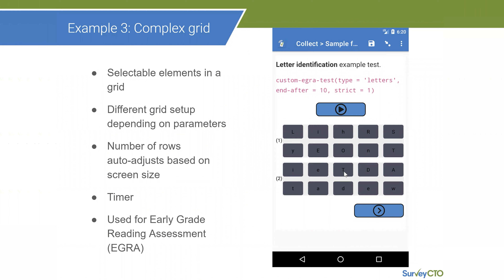Another example is the timed grid test field plugin, which gives us a complex grid presentation of elements. The elements are presented in a grid and are selectable — you can pick them by clicking. As you change different tests within this field plugin it gives you a different view. The number of rows adjusts depending on the screen size, and it also has a timer. This field plugin works for exercises such as the Early Grade Reading Assessment, facilitating those kinds of assessments.